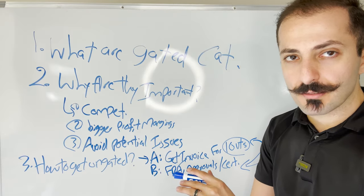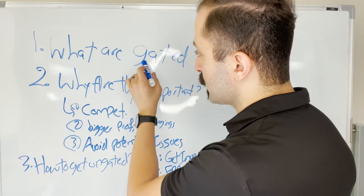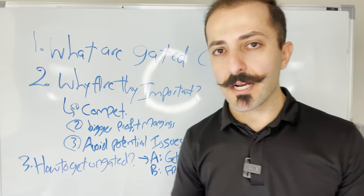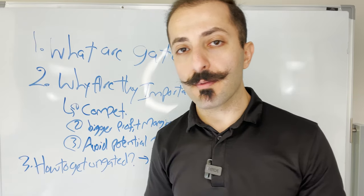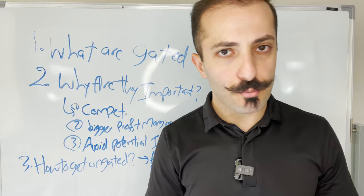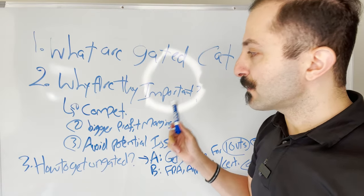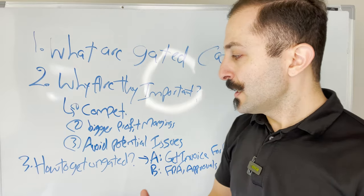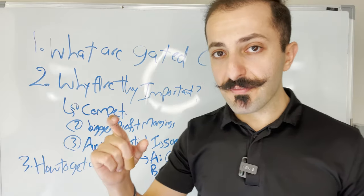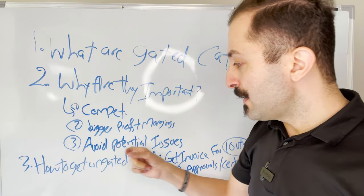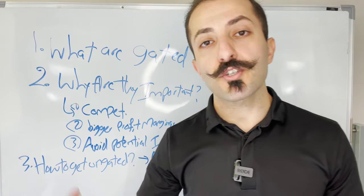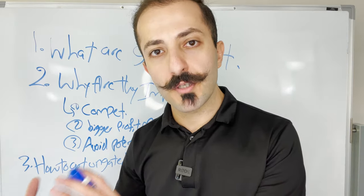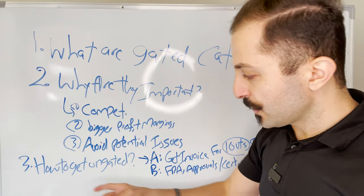All right. So just kind of a recap on what we talked about here. So the very first thing is what are gated categories? They are categories that you can sell in on Amazon, but you need some approvals. Why is it important for you to sell under those categories? Because number one, they are less competitive. Number two, there's bigger profit margins. You can make more money. And number three, you simply avoid potential problems because you have already kind of done the legwork in the beginning.